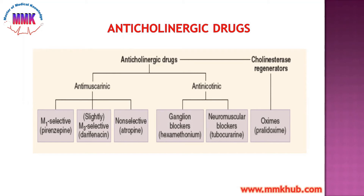Now let us revise anti-muscarinic and anti-nicotinic drugs. The cholinergic (parasympathetic) system has two types of receptors: muscarinic receptors and nicotinic receptors. So we have two types of drugs — those that inhibit muscarinic receptors, called anti-muscarinics, and those that inhibit nicotinic receptors, called anti-nicotinics.